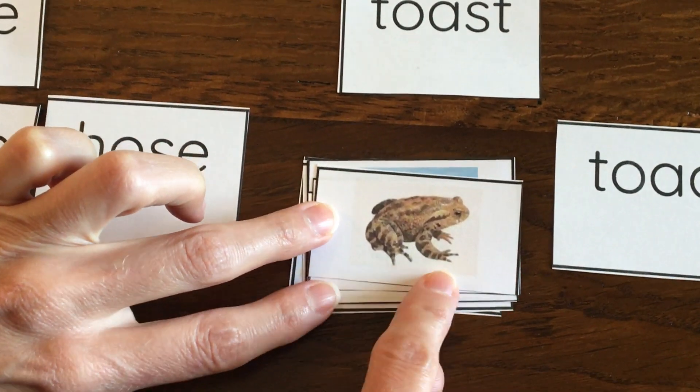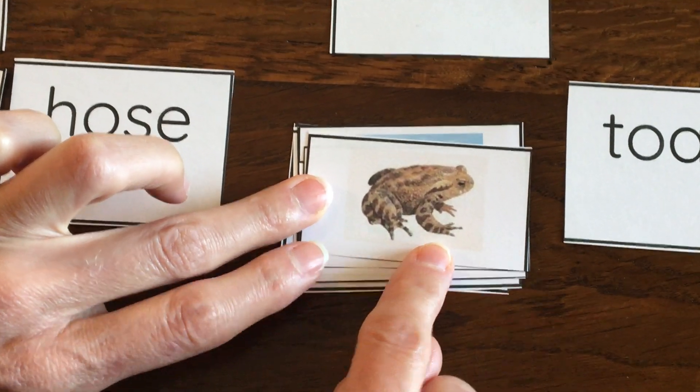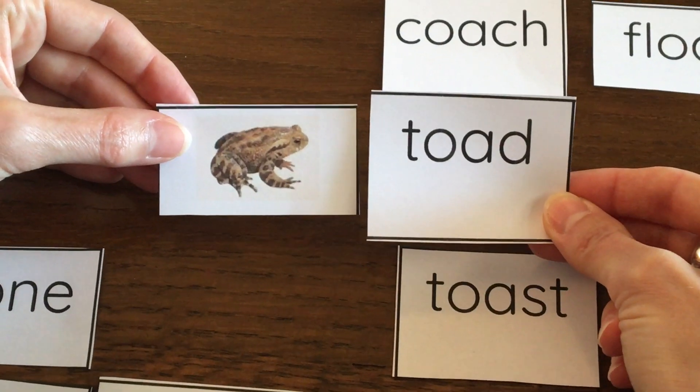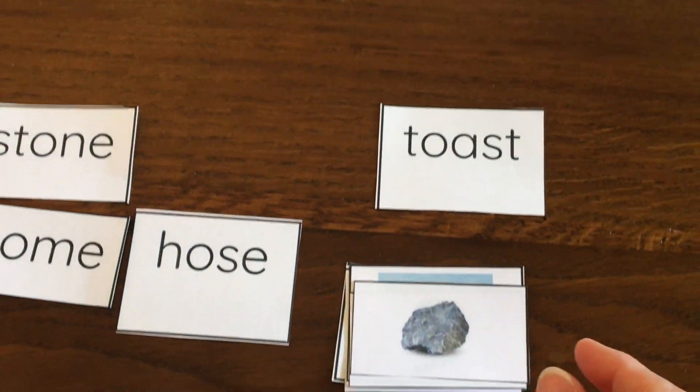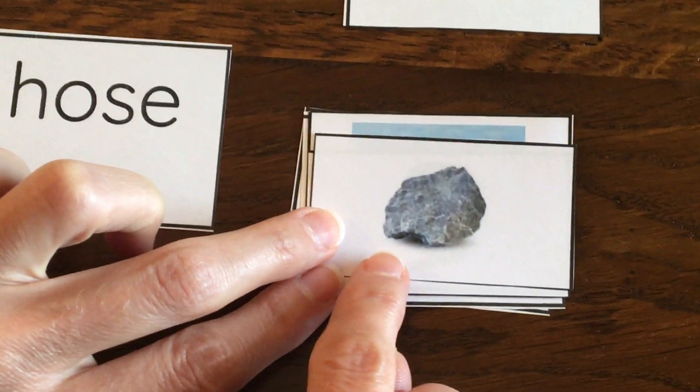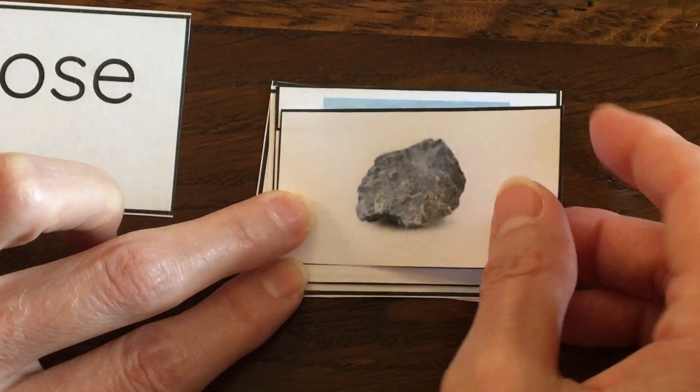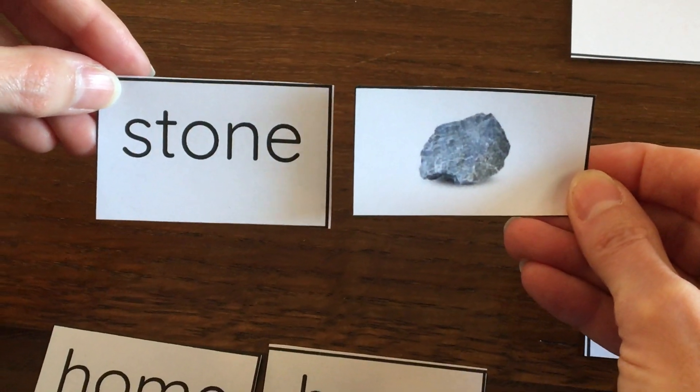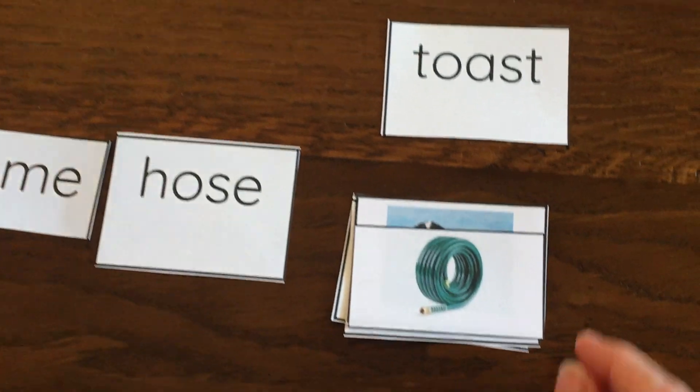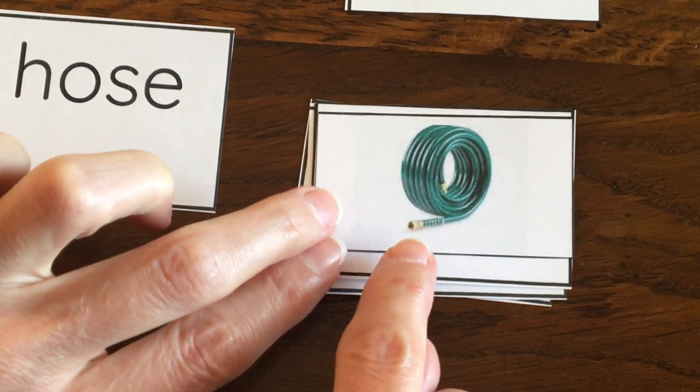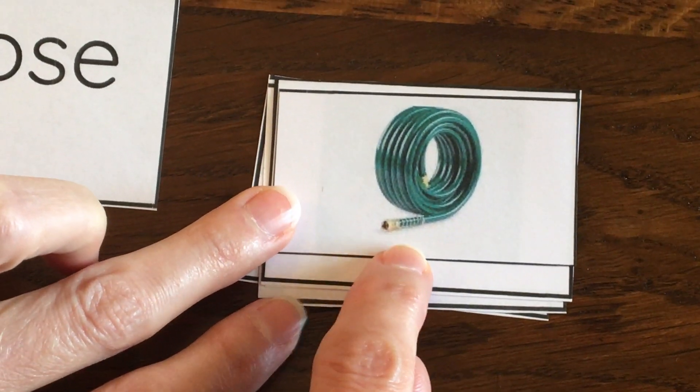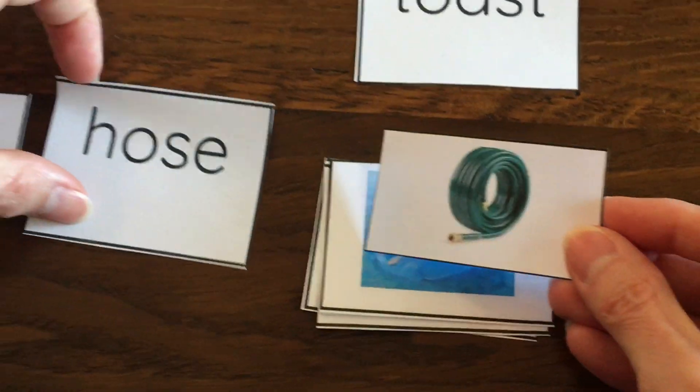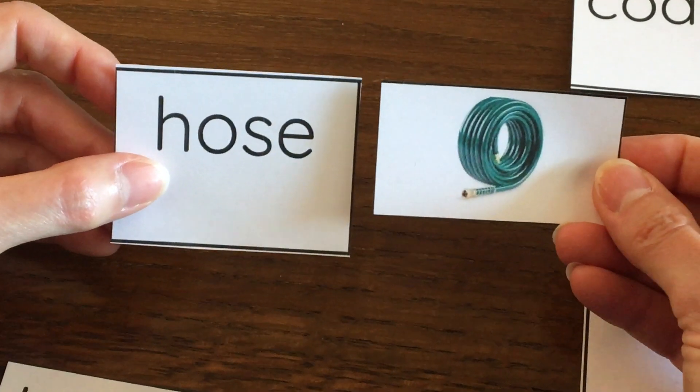This is a toad. Toads are usually brown, whereas frogs are green. So here's our word toad and our picture. Well, this is a rock and another word for a rock is a stone. So those two are a match. If you have a house, you might have this on the outside of your house. It's called a hose. And it fills up with water and you can wash the car. You can water the plants with the hose.